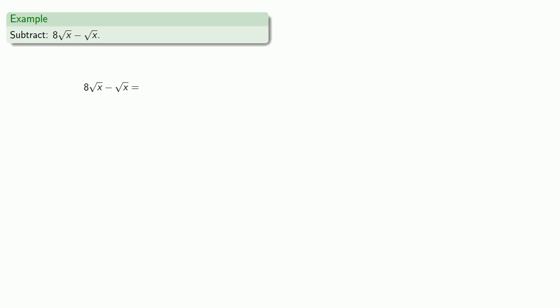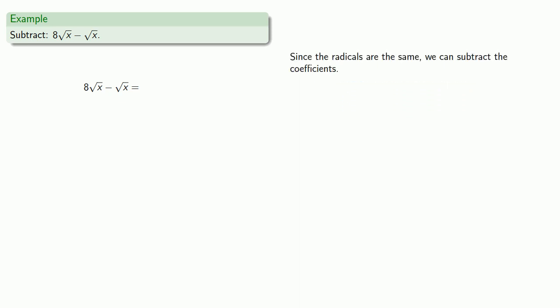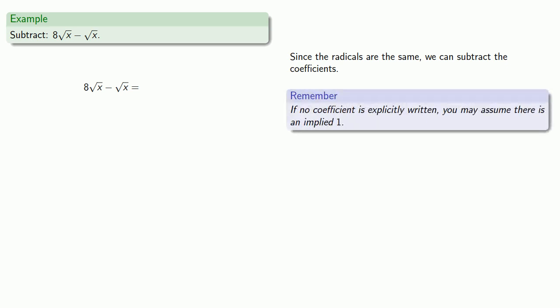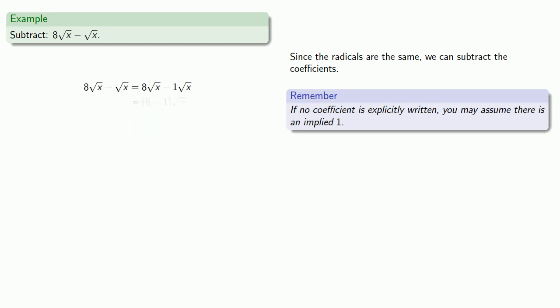Likewise, we can subtract 8 square root of x minus square root of x. Since the radicals are the same, we can subtract the coefficients. It's useful to remember that if no coefficient is explicitly written, you may assume there is an implied 1. So that square root of x is really 1 square root of x. We'll subtract our coefficients, 8 minus 1, and keep that square root of x.